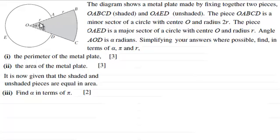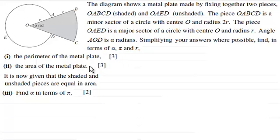Angle AOD is alpha radians. Simplifying your answers where possible, find in terms of alpha, pi and r: part one, the perimeter of the metal plate for three marks; part two, the area of the metal plate for three marks; and finally, given that the shaded and unshaded pieces are equal in area, find alpha in terms of pi for two marks.